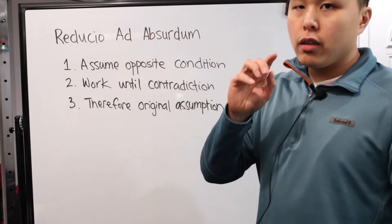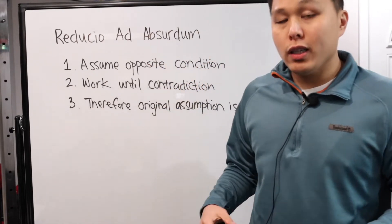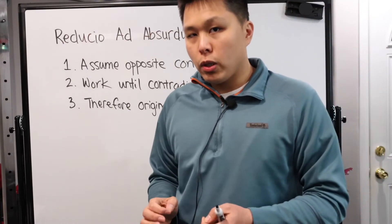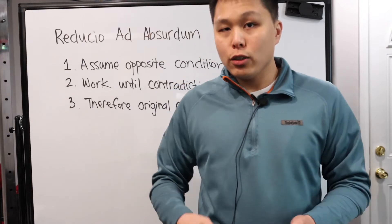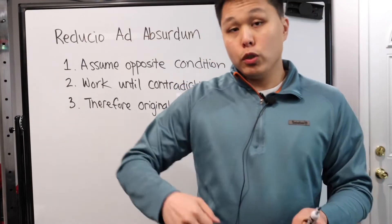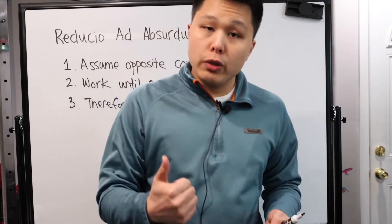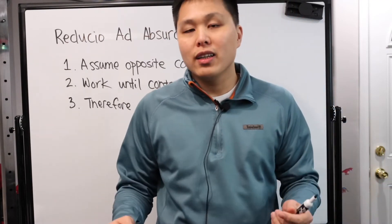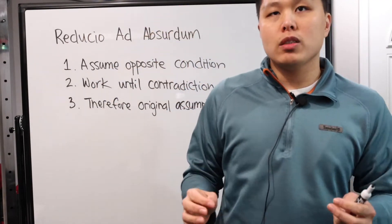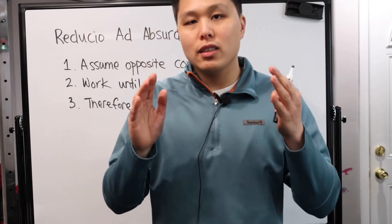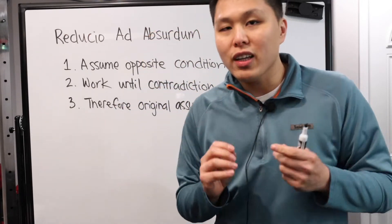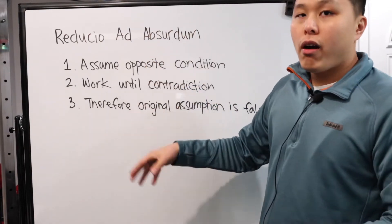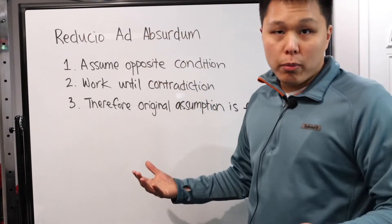One of the most famous examples is the idea that the square root of two is an irrational number. It's built on the idea that you assume the opposite — that square root two is a rational number — and you run into a contradiction. I did a whole video on it; it's an extremely famous classic. You should definitely take your time to look at it — I'll leave a link in the description down below.